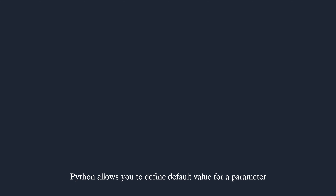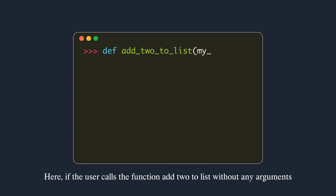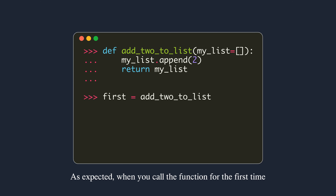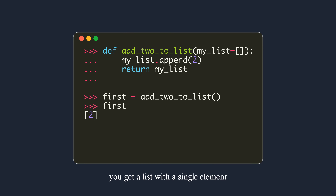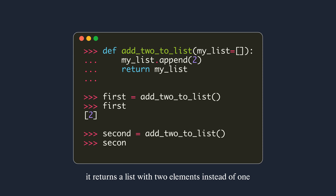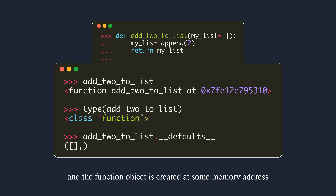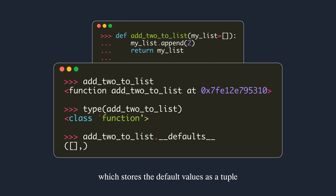Python allows you to define default values for parameters when defining a function. For example, a function add_two_to_list where if the user calls it without any arguments, the value of my_list will be an empty list. We append two to this list and return the reference. As expected, when you call the function for the first time you get a list with a single element. But when you call the function a second time, it returns a list with two elements instead of one — this is probably not what you wanted. Remember, everything is an object in Python — even functions. A function is an object of the function class created at some memory address, and the function object has a __defaults__ attribute which stores the default values as a tuple.